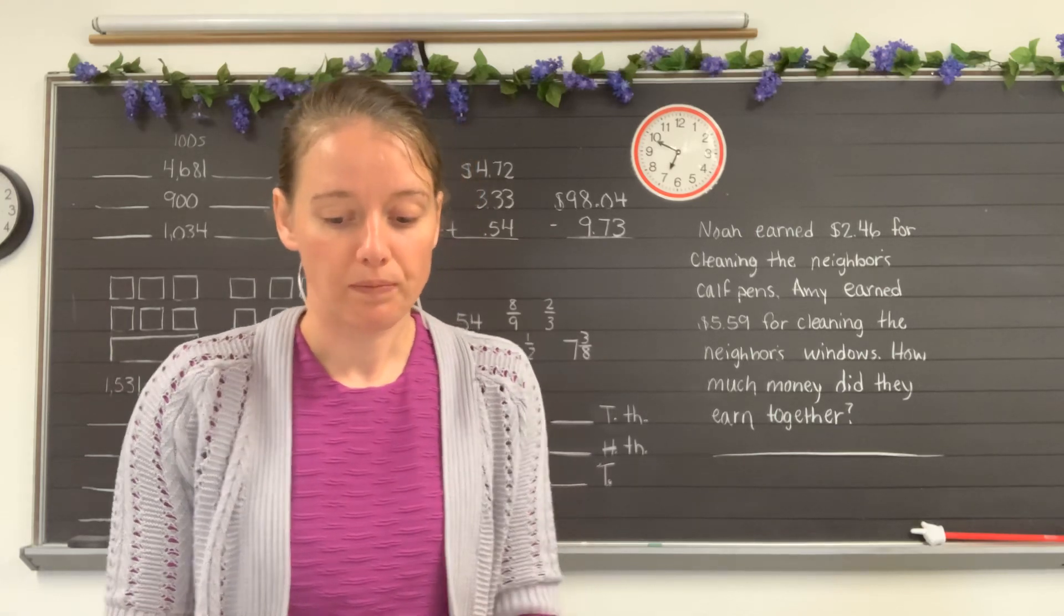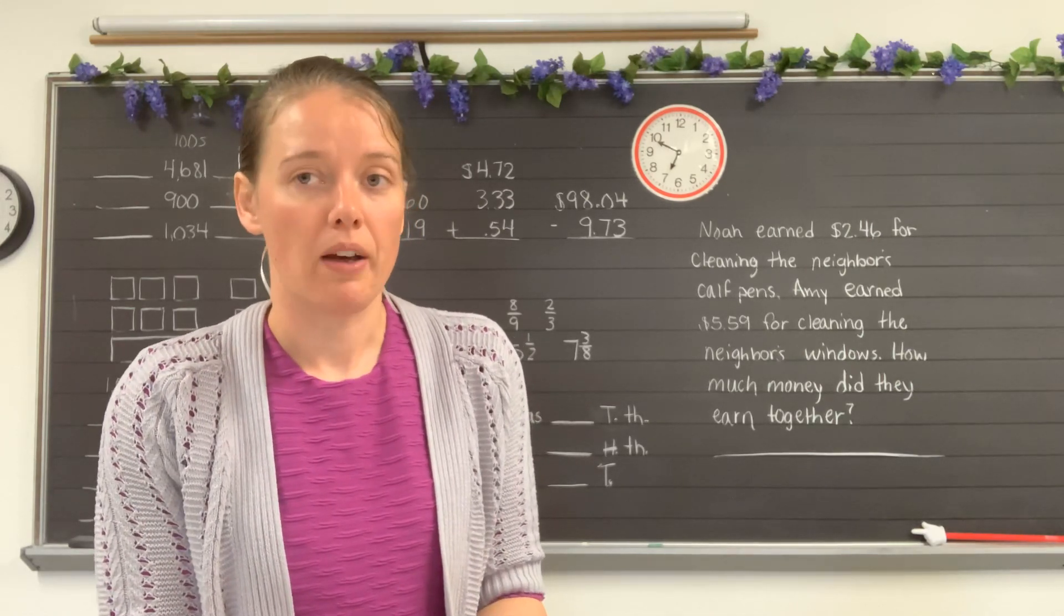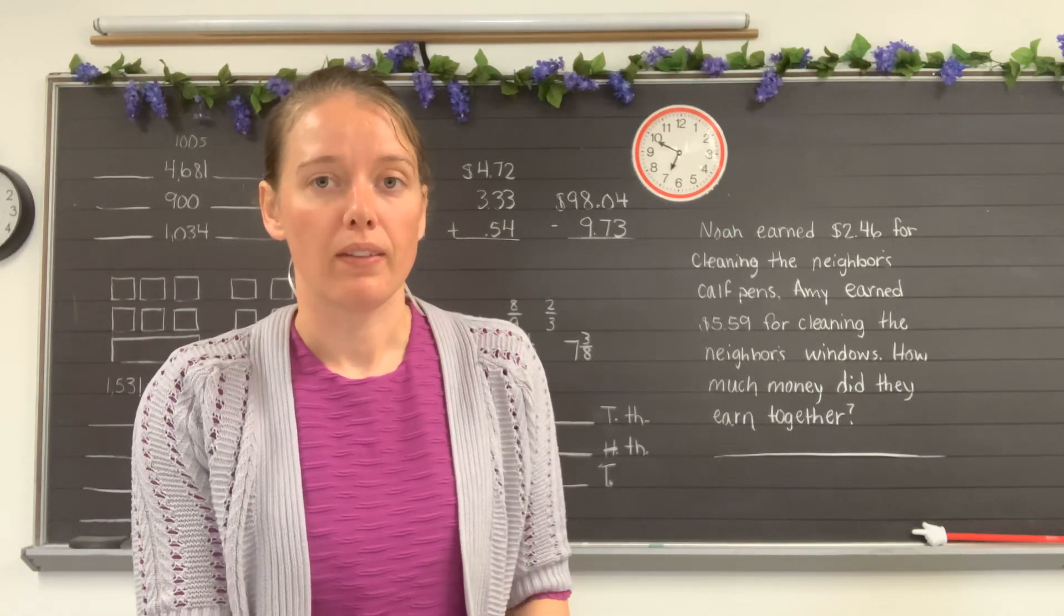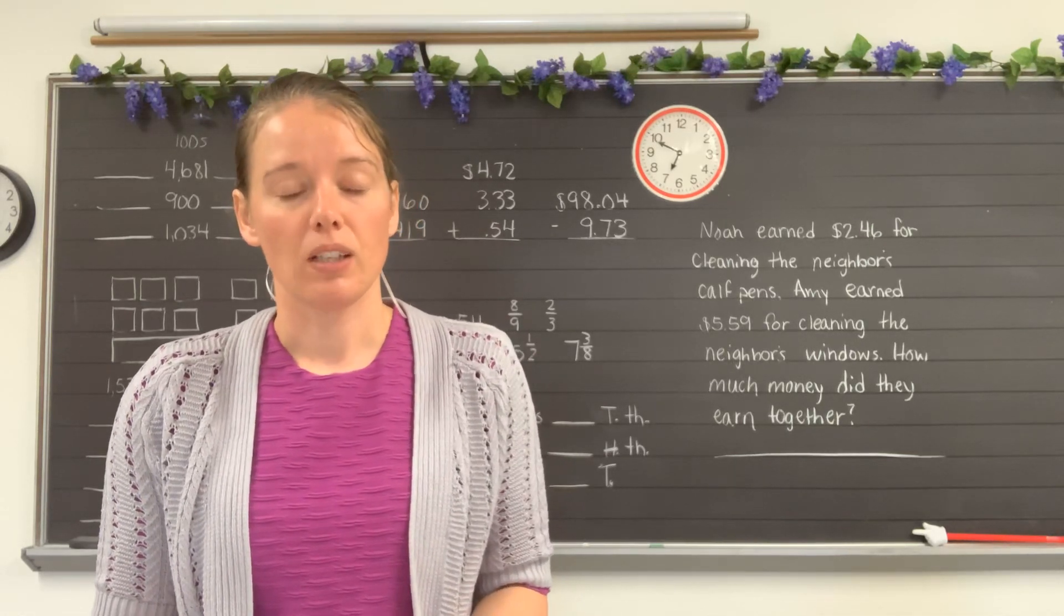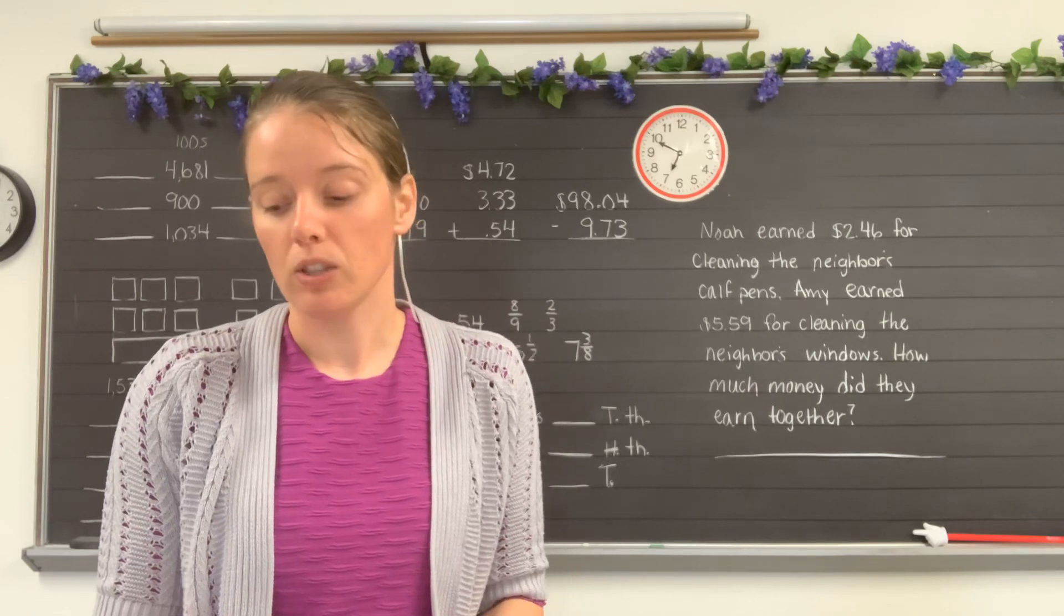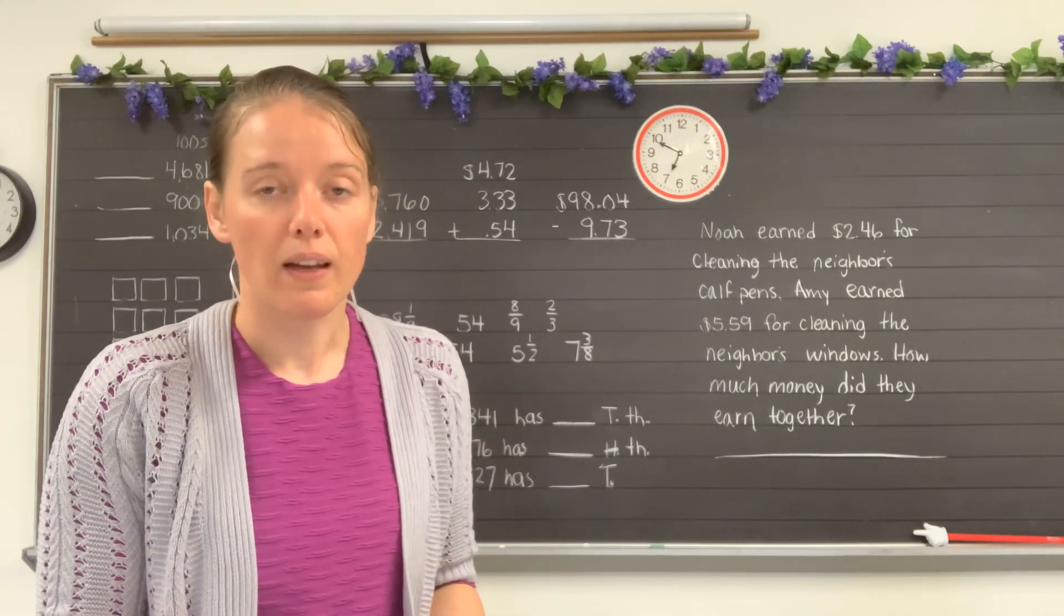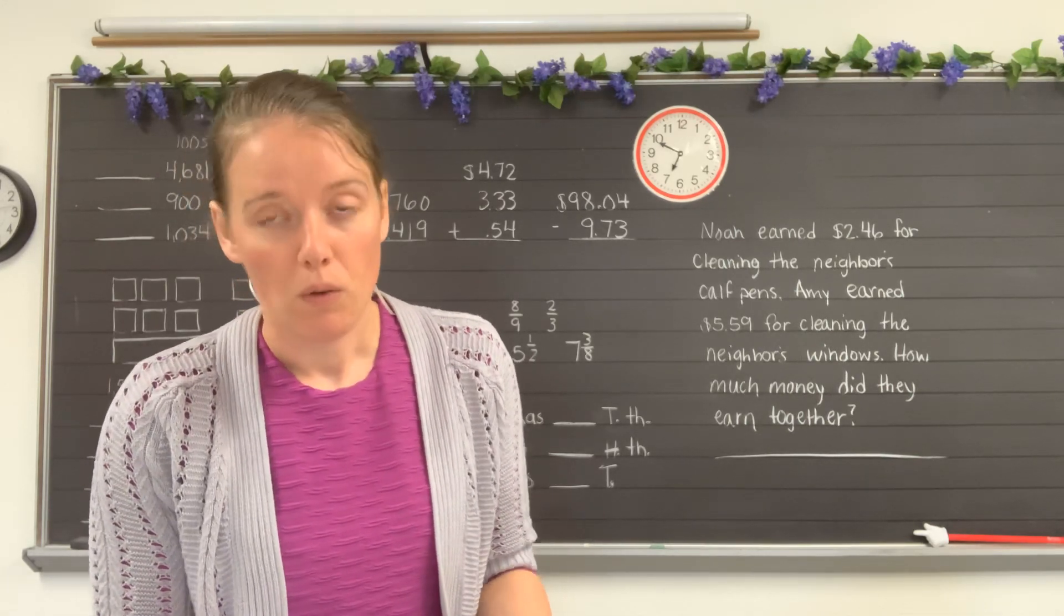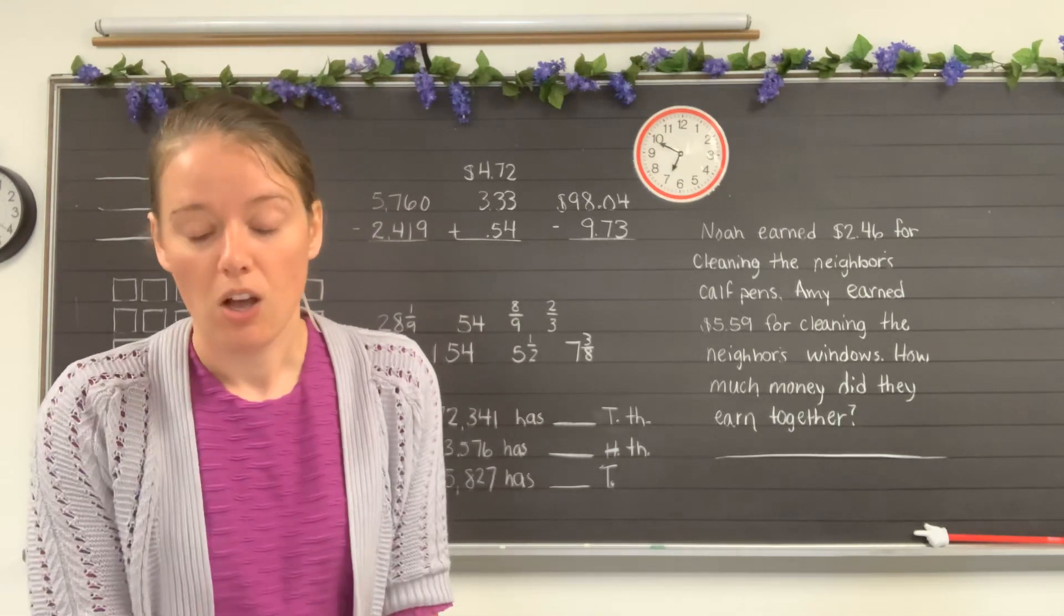First of all, we're going to start out by counting by 50s and you can count with me from 1,000 to 2,000 by 50s. So 1,000, 1,050, 1,100, 1,150, 1,200, 1,250, 1,300, 1,350, 1,400, 1,450, 1,500, 1,550, 1,600, 1,650, 1,700, 1,750, 1,800, 1,850, 1,900, 1,950, and 2,000. Very good.